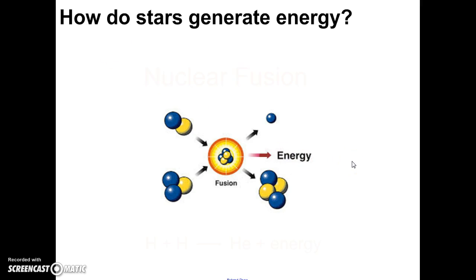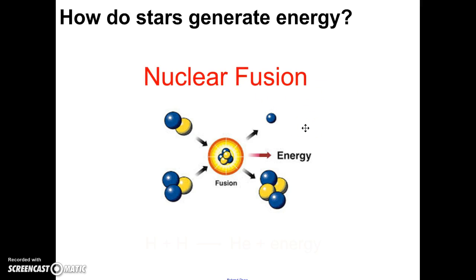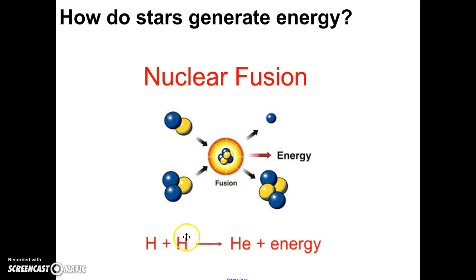If you remember back from our study of energy, stars generate energy through a process called nuclear fusion. What they do is they take hydrogen atoms and fuse them together — they combine them. When hydrogen atoms are combined, the result is helium and energy. That energy is the light and the heat that we get from the sun. All stars create energy this way.